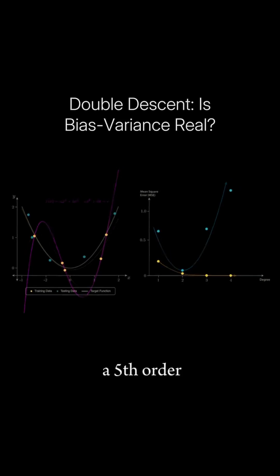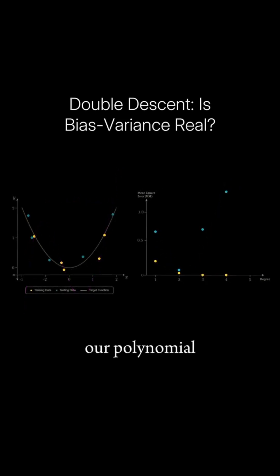Now moving to a fifth order polynomial, our polynomial is still able to perfectly fit our training data. But because our curve has six free parameters, but we still only have five training points, this means that there will actually be an infinite number of fifth order polynomials that perfectly fit our five training points.